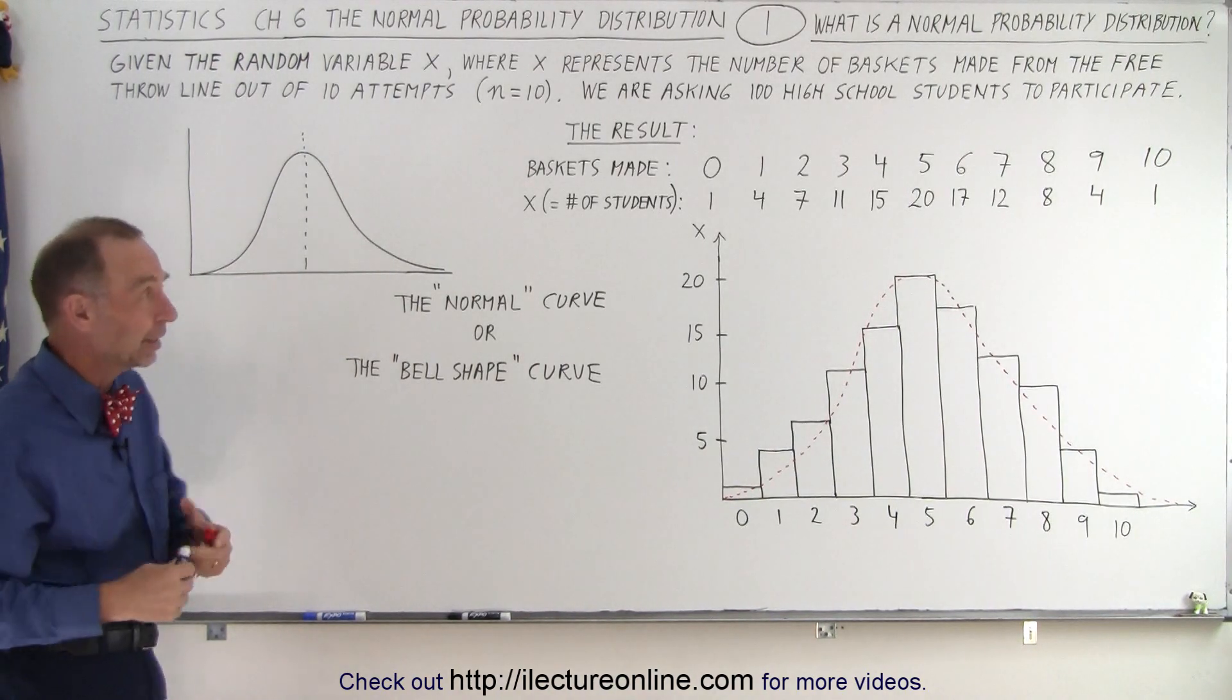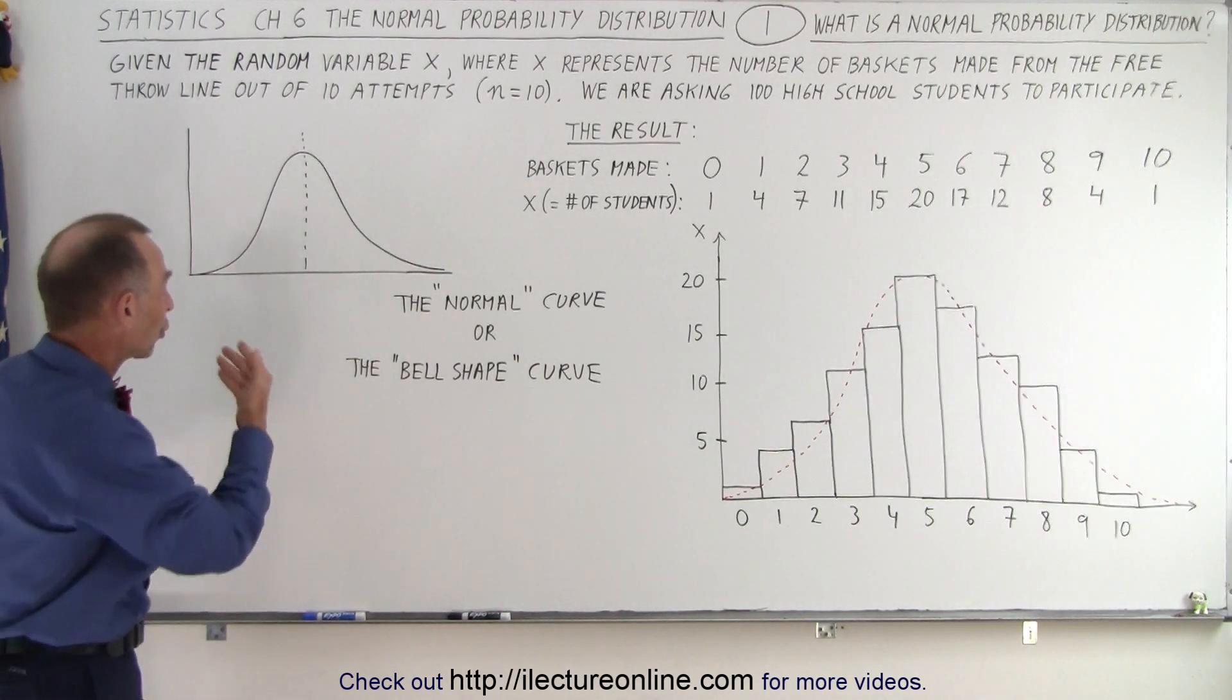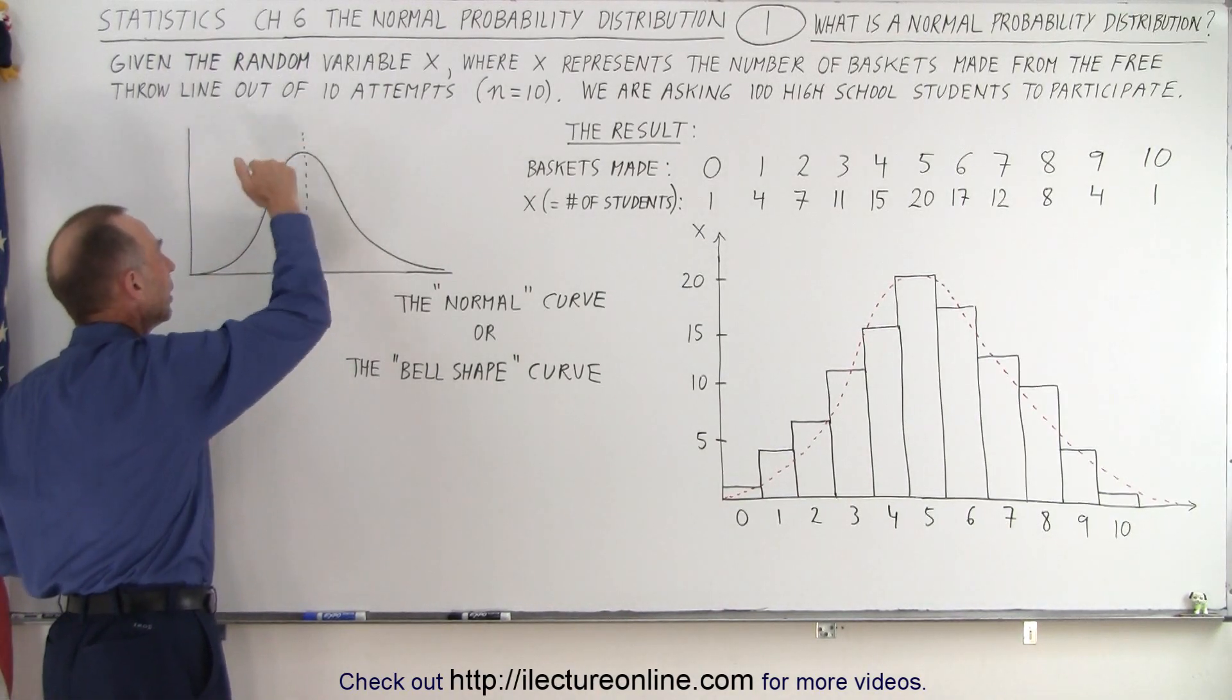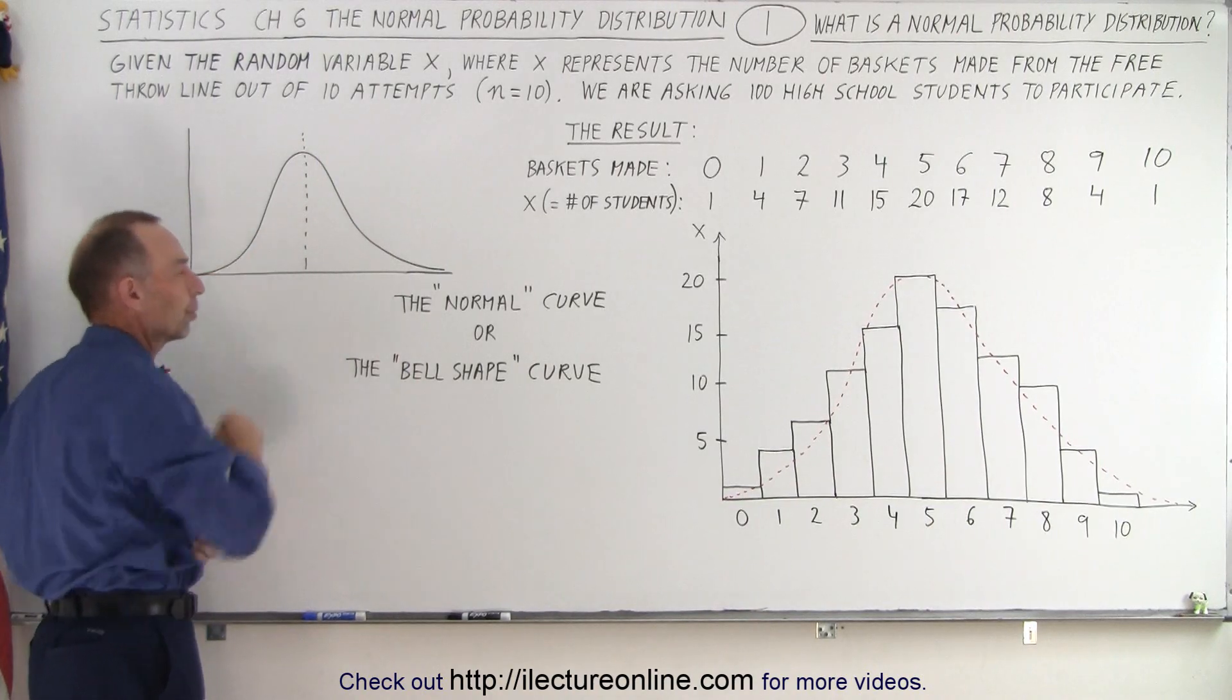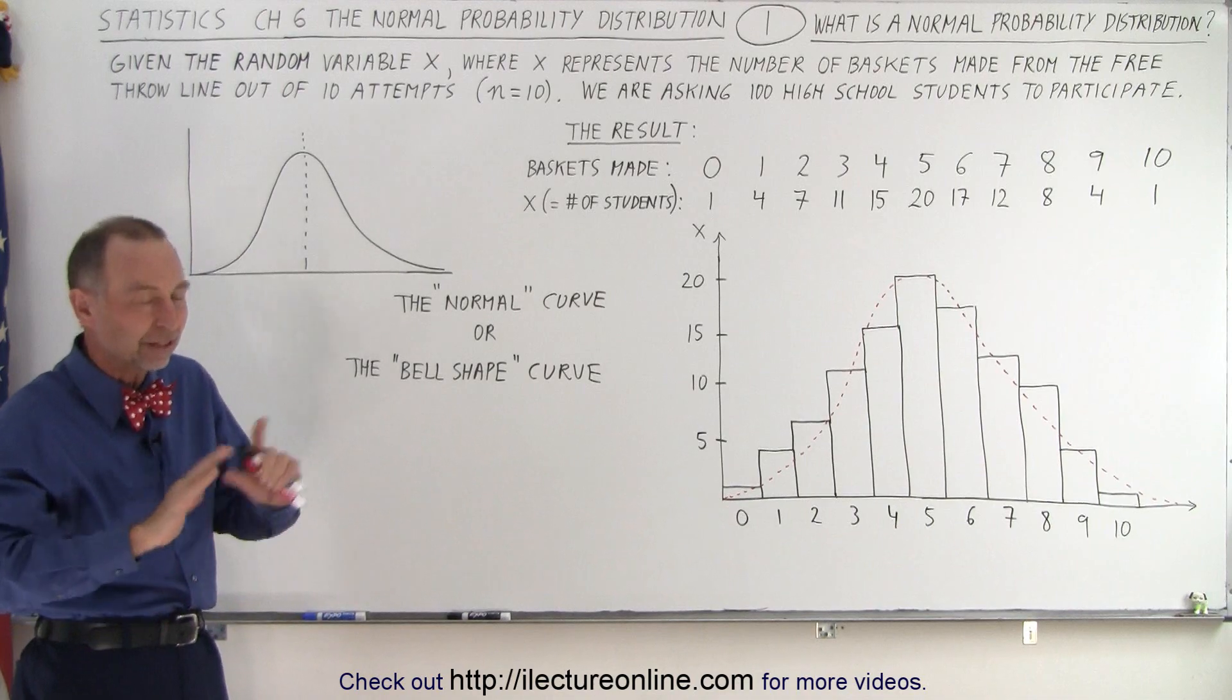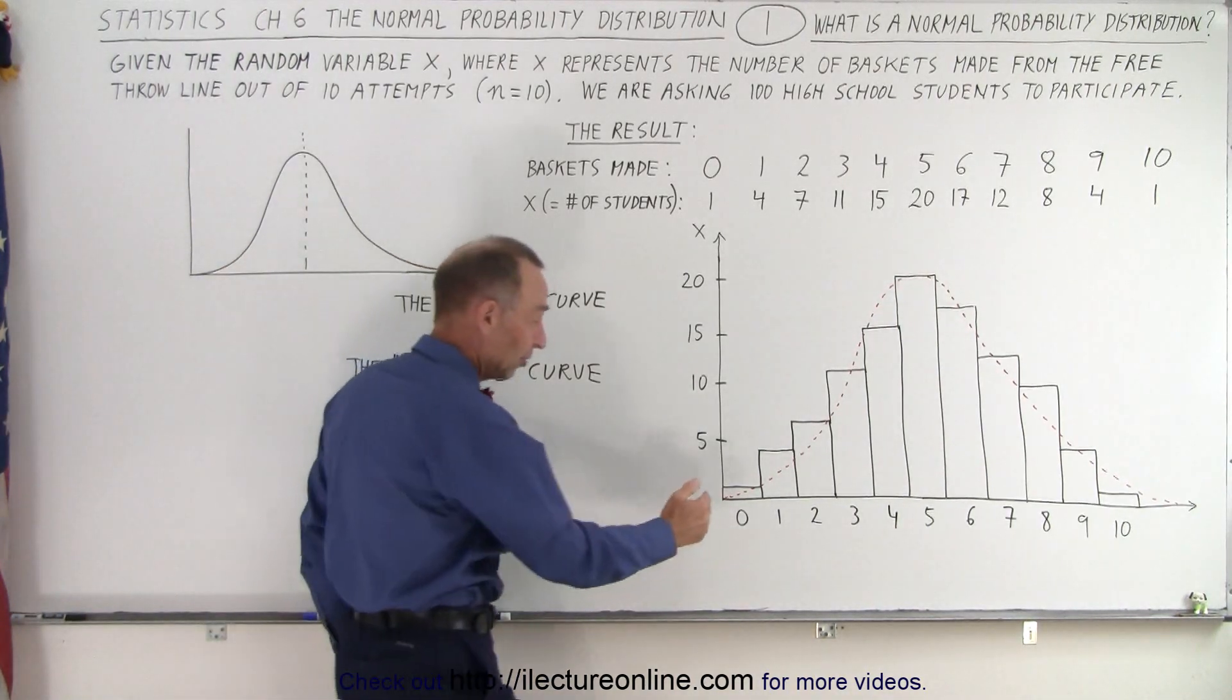But then again, what is the Probability Distribution? Well, it's a curve that represents probabilities. The higher the curve, the greater the probability. The lower the curve, the smaller the probability. So if you just simply look at the numbers at the bottom, and let's not read yet what's up there.